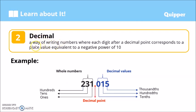Decimals are a way of writing numbers where each digit after a decimal point corresponds to a place value equivalent to a negative power of 10. Example: 231.015. The digits 2, 3, 1 are whole numbers: 1 is for the ones value, 3 for the tens, 2 for the hundreds. For decimals, we have the decimal point. We have 0 for the tenths, 1 for the hundredths, 5 for the thousandths.